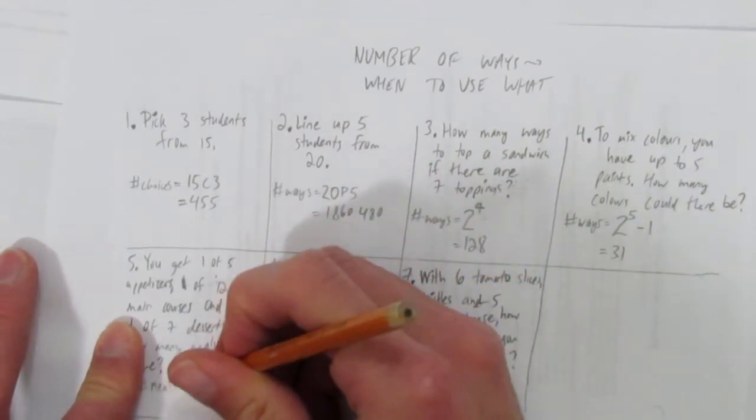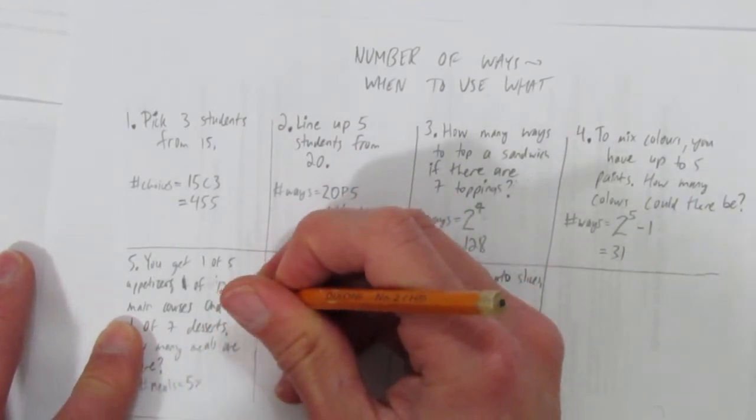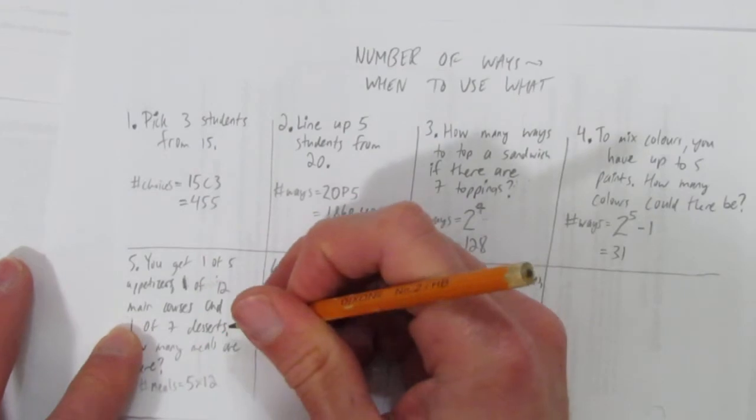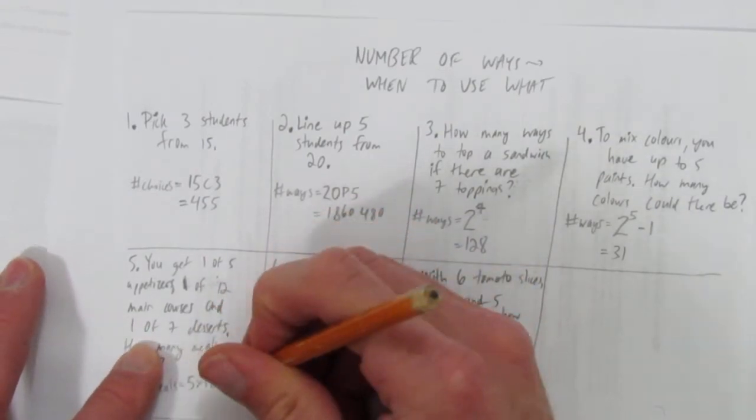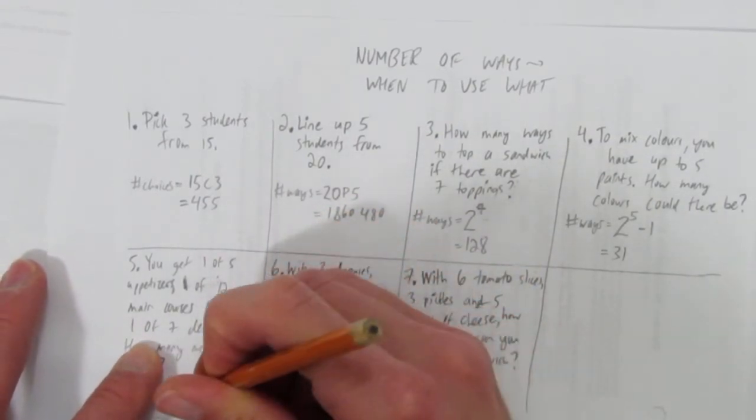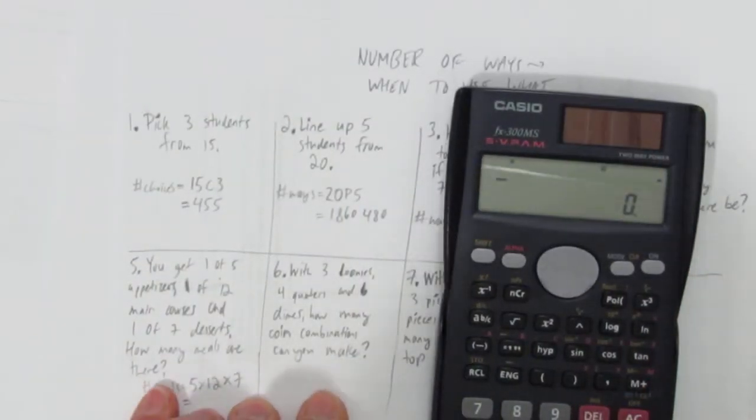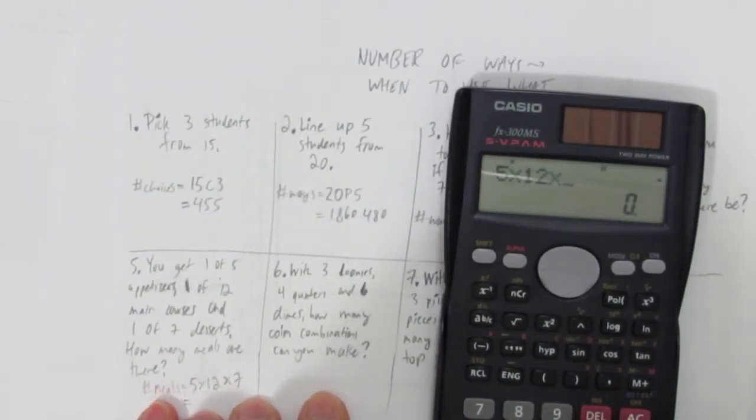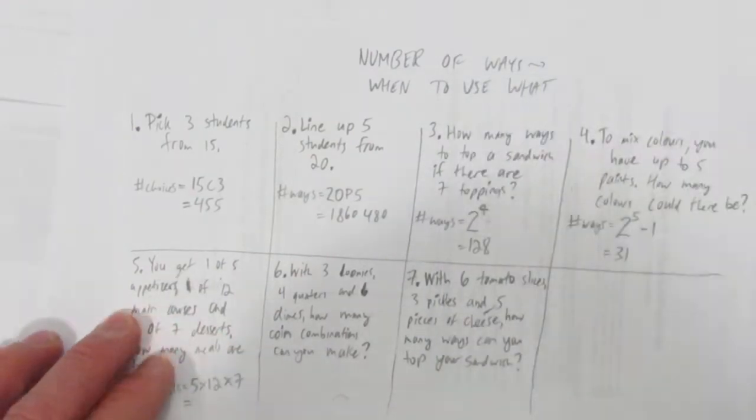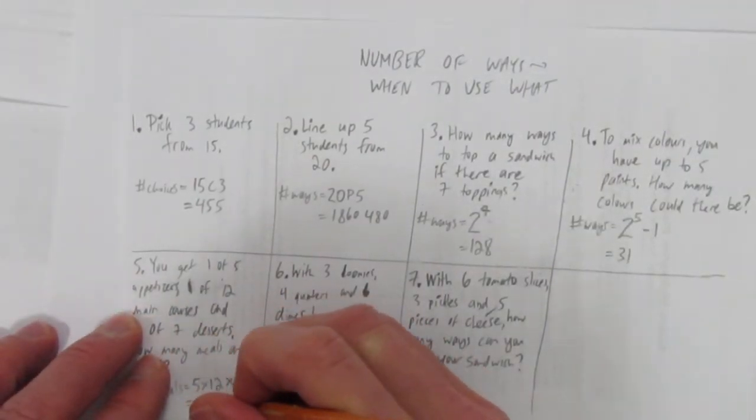The number of meals is just fundamental counting principle. You have to choose one of five things, so five choices. One of twelve things, twelve choices. One of seven things, seven choices. Using fundamental counting principle in this situation just means multiply the number of choices together: 5×12×7 = 420 different possible meals.